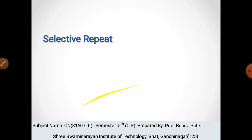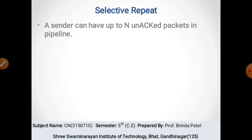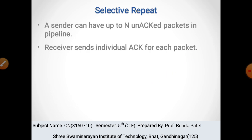In selective repeat protocol, a sender can have up to an unacknowledged packets in the pipeline — means sender के पास pipeline के अंदर जो भी unacknowledged packets हैं, यानि जिसका acknowledgement receiver side से नहीं मिला है, वो pipeline में होंगे। वो up to any number के हो सकते हैं — एक, चार, या पाँच। Receiver sends individual acknowledgement for each packet.